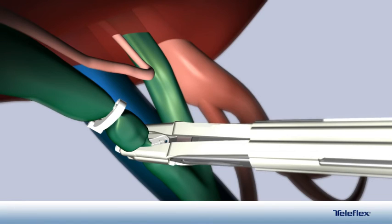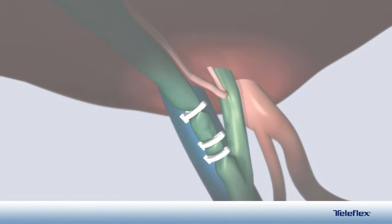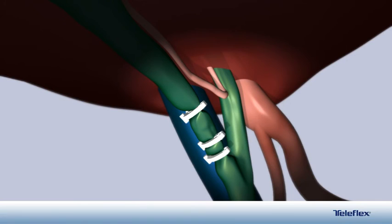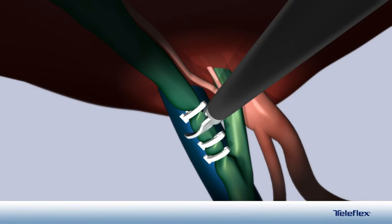Two additional clips are placed across the cystic duct. With three clips placed across the cystic duct, two on the patient side and one on the specimen side, the cystic duct is divided using a pilling laparoscopic scissor.